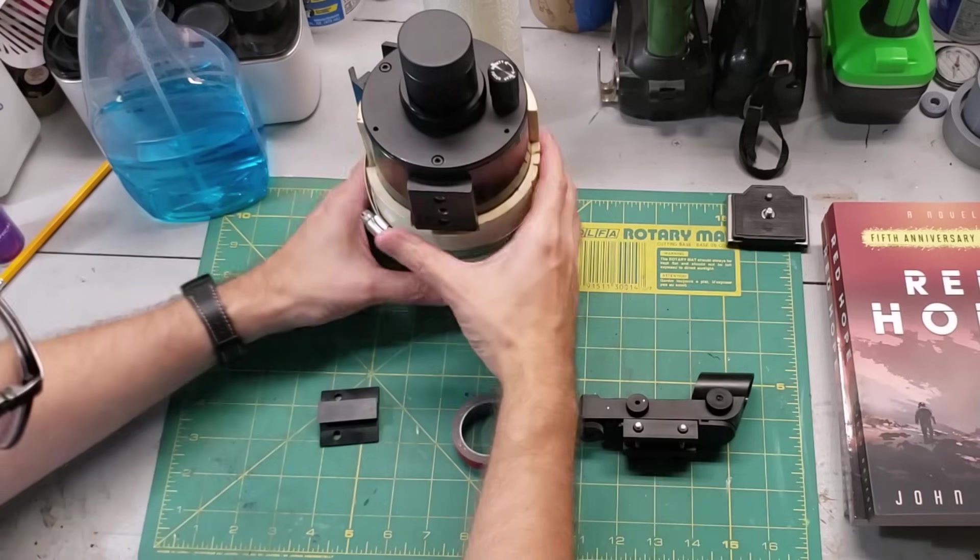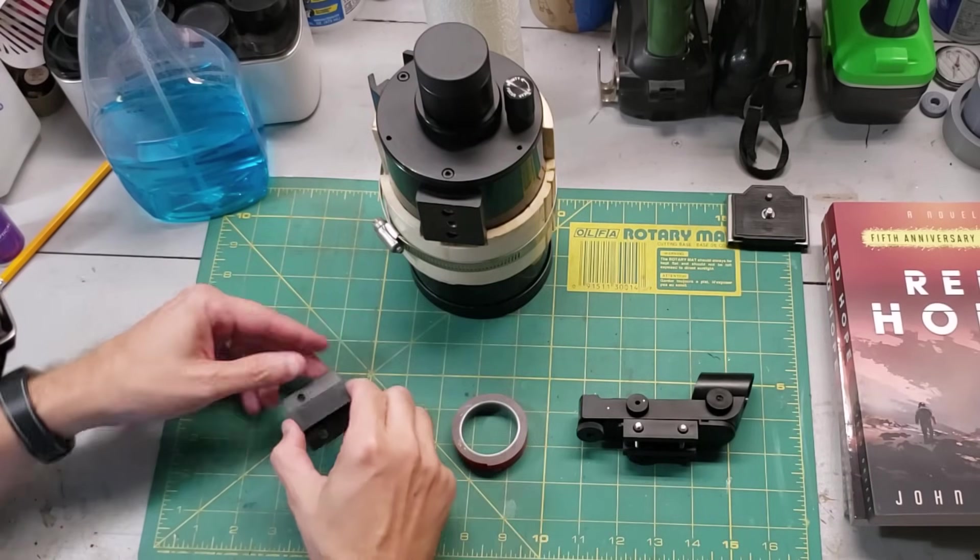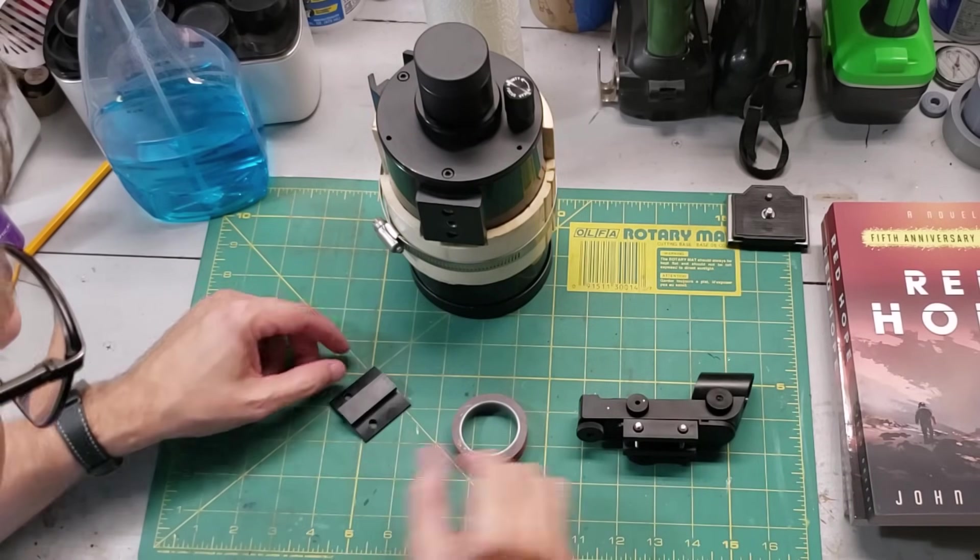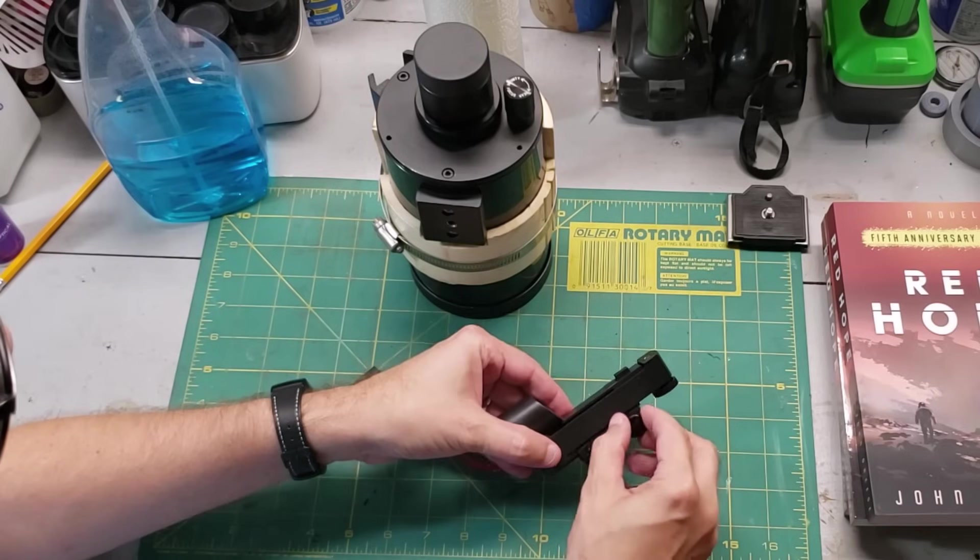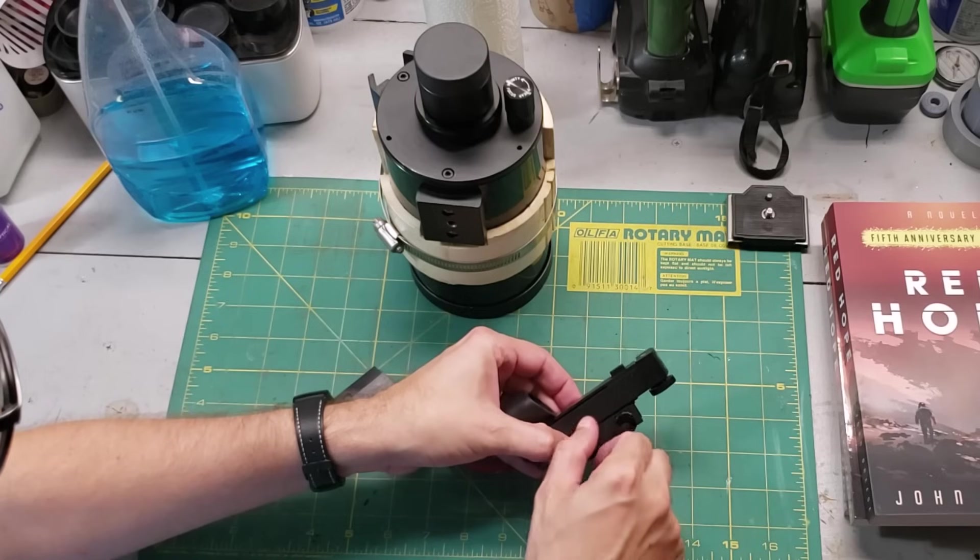So here's all the parts we're going to need. We've got the telescope, obviously. We've got a flush mount for the red dot viewfinder. We've got the red dot viewfinder. I've modified it slightly. I put some knurled screws.